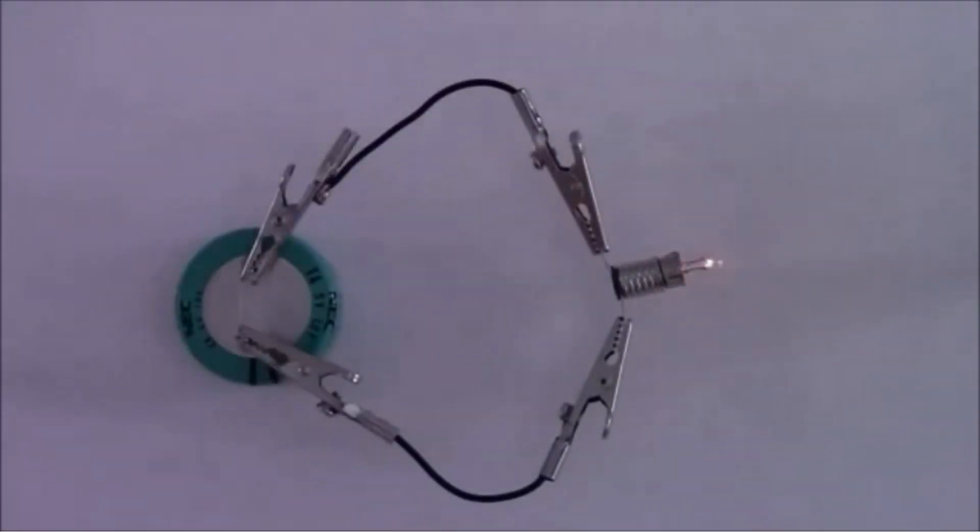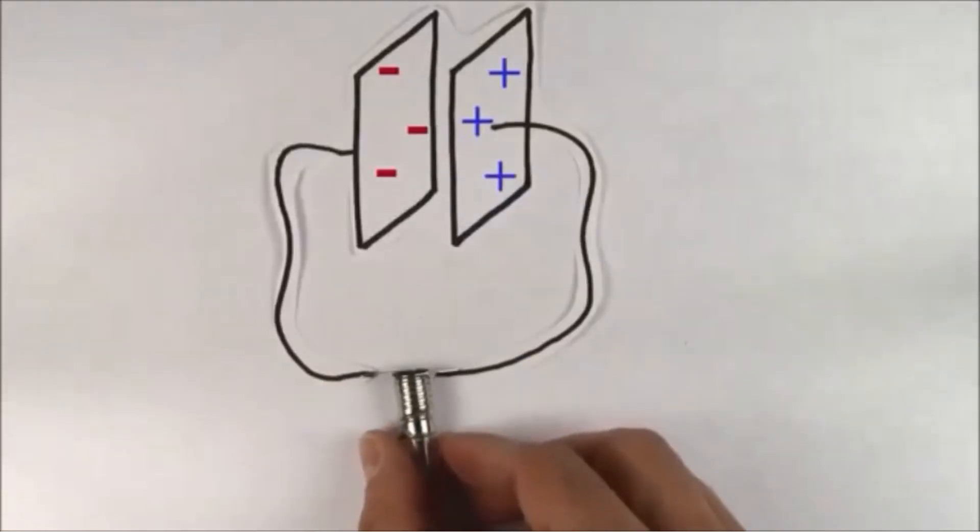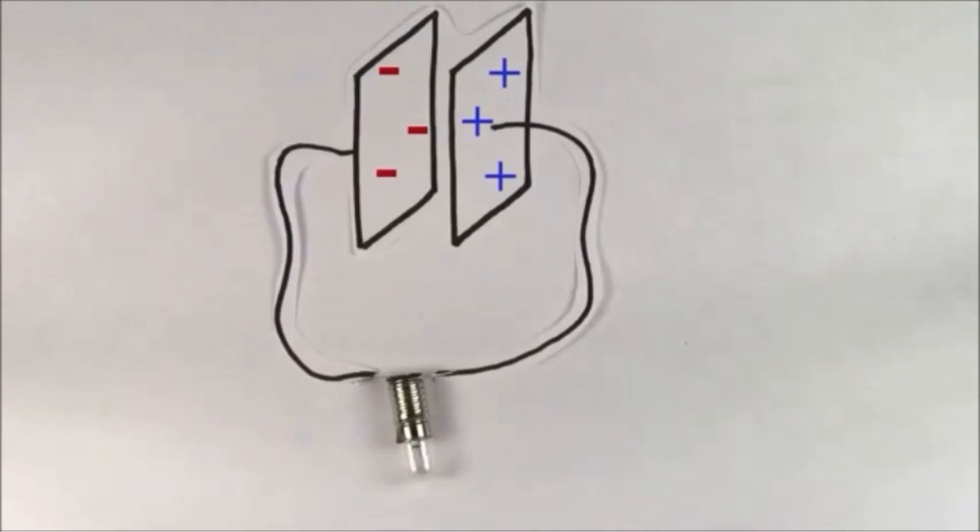The reason this happens is because when a capacitor is charged up, it not only stores charge, but it stores energy as well. When we hooked up the capacitor to the battery, the charges got separated. These separated charges want to come back together when given the chance, because opposites attract.